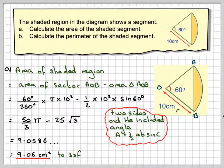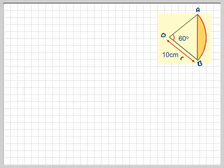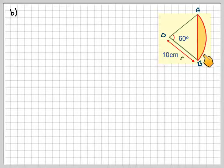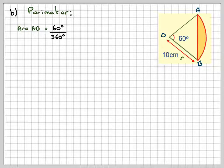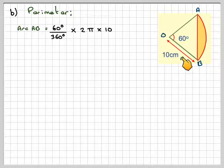For part B, we have to find the perimeter. So that's going to be all this region here, the red bit that I've just gone round here, that's the perimeter. So the arc AB will be 60 over 360 times the circumference of the circle, so it's 60 over 360 of it. The circumference of the circle is 2 pi R, so it's going to be 2 times pi times 10, because the radius is 10.